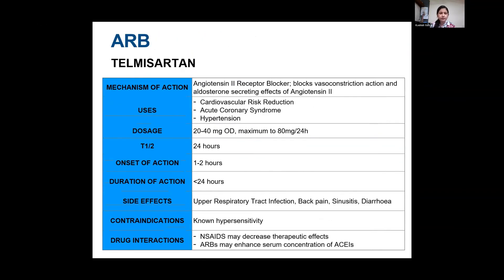Angiotensin receptor blockers — telmisartan: mechanism of action is blocking angiotensin II receptor, blocking vasoconstriction action and aldosterone-secreting effects of angiotensin. Used in cardiovascular risk reduction, acute coronary syndrome, and hypertension. Starting dose 20–40 mg once daily; maximum up to 80 mg in 24 hours; half-life approximately 24 hours; onset of action within 1–2 hours; duration less than 24 hours. Side effects include upper respiratory tract infection, back pain, sinusitis, and diarrhea. Contraindications include known hypersensitivity. NSAIDs may decrease the therapeutic effect of ARBs; ARBs may enhance serum creatinine concentration.